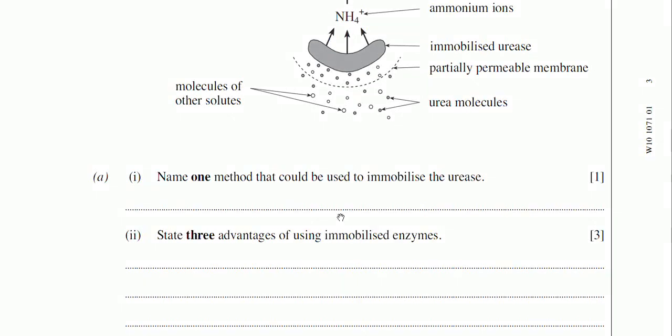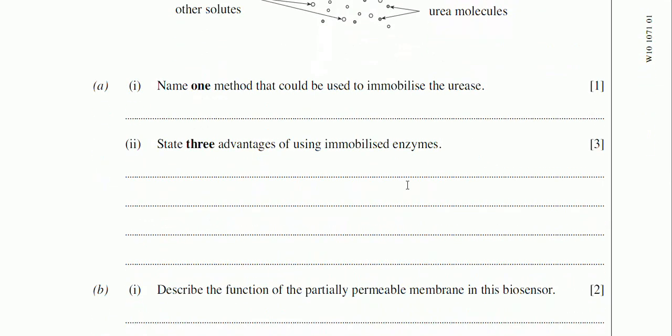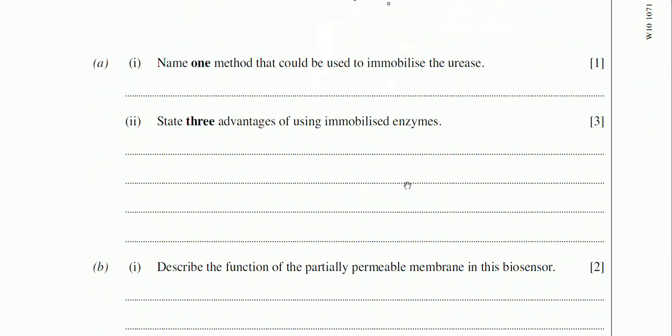Let's have a look at the first question then. A1, name one method that could be used to immobilize urease. The best answer to put really, simple, straightforward enough, is to say immobilize the urease in alginate beads or maybe a gel membrane. So I've said there, use alginate beads.